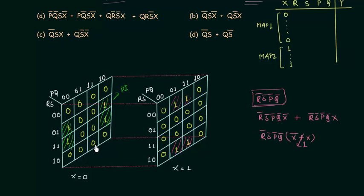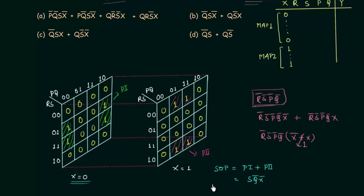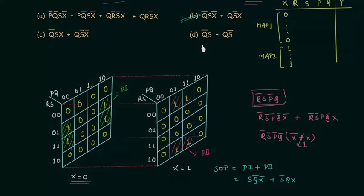Since there are zeros corresponding to those four ones in the other map, we label those groups P1 and P2. The minimized SOP expression is P1 + P2. From P1: S is 1 for those rows, Q' since Q is 0 for those columns, and X' since X equals 0 — giving SQ'X'. From P2: S'Q. Therefore, the minimized SOP form is SQ'X' + S'Q, which matches option B, the correct answer.